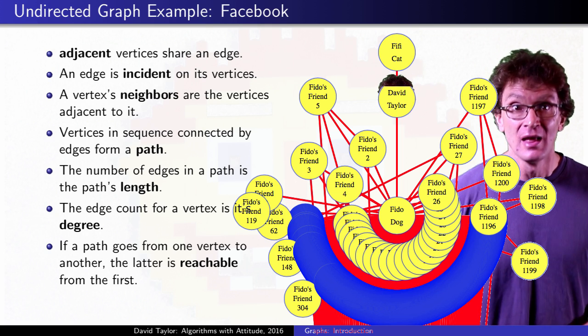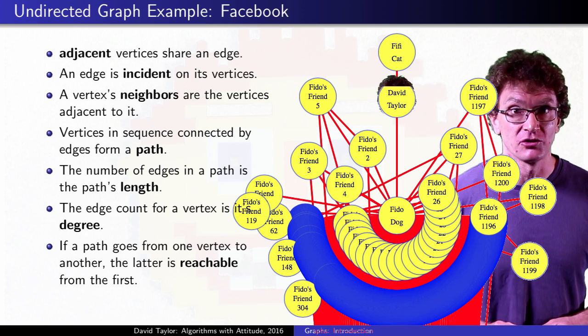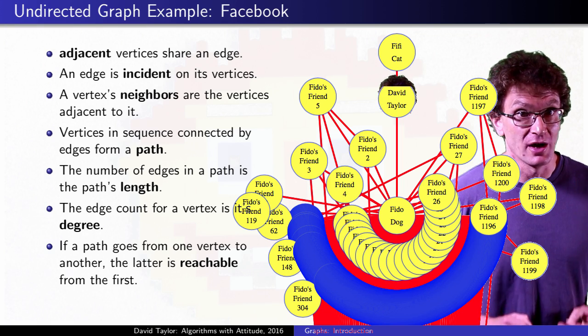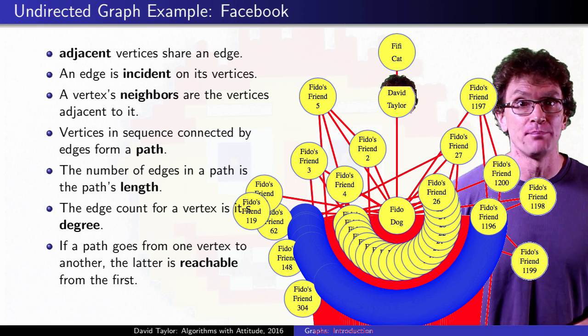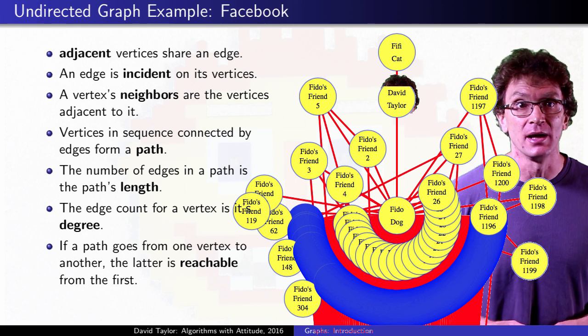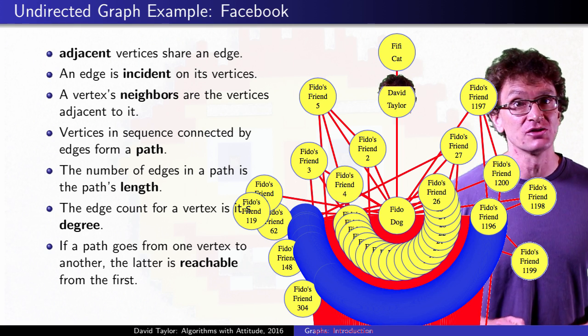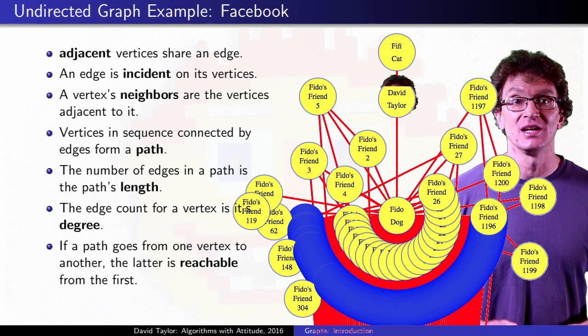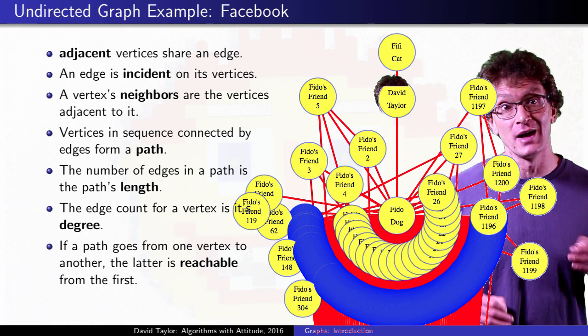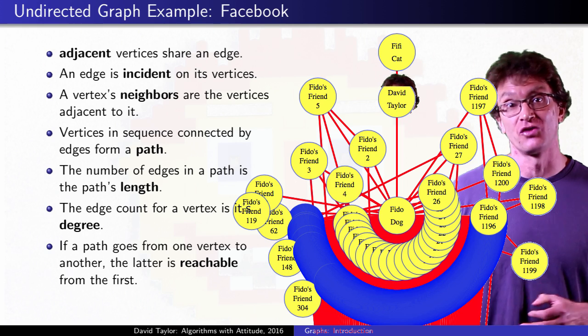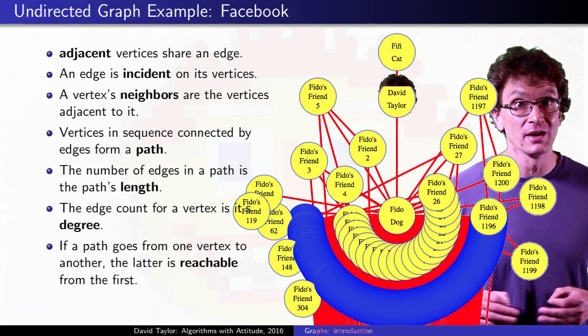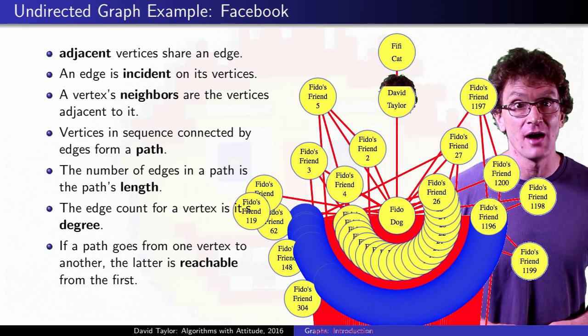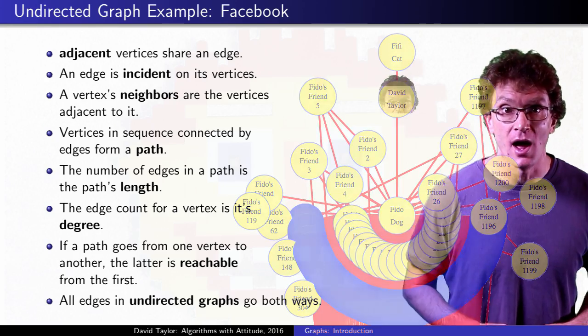Want a bigger graph? Think about the graph of web pages. Each web page is a vertex, with an edge to another web page if it has a link to that page. Notice there's a fundamental difference between this graph and the one for Facebook. In Facebook, the friendship relation is symmetric. I'm friends with my dog if and only if my dog is friends with me. When all relations have to be symmetric in a graph, that's called an undirected graph.